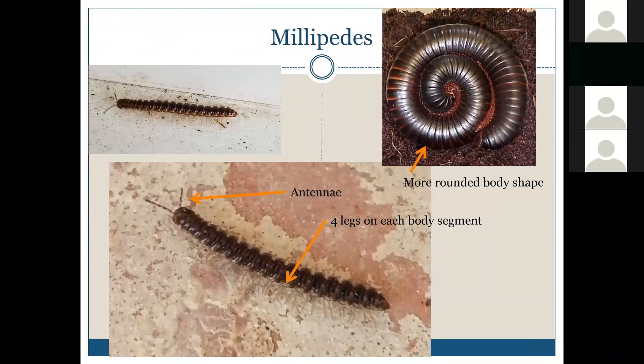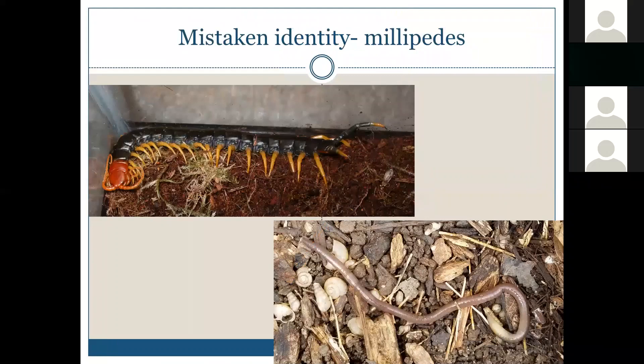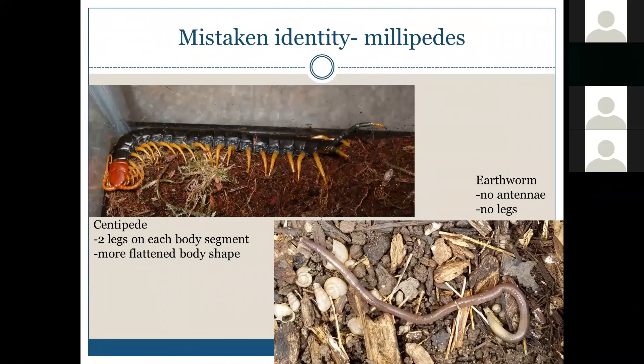Millipedes are often confused with centipedes — the general difference is that centipedes have a more flattened body shape and only two legs on every segment of their body. The other one is the earthworm, which does not have legs and does not have antennae, and they're also kind of slimy if you touch them. But a lot of people don't want to touch whatever comes into their house, and that's perfectly fine.